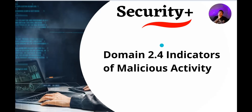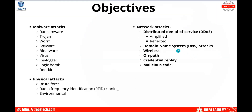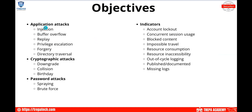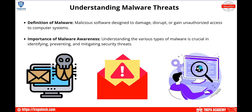All right, now let's go over Domain 2.4 - Indicators of Malicious Activity. In this section we're going to go over a lot of different things. It's a pretty robust section, so we're going to cover different types of malware attacks, physical attacks, network-based attacks, application attacks, cryptographic attacks, password attacks, and also how we can discover these types of attacks and the indicators of compromise.